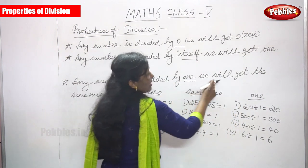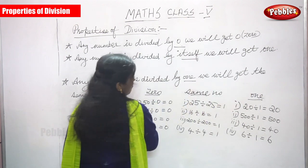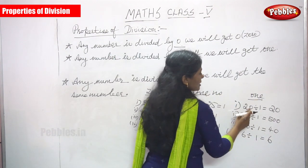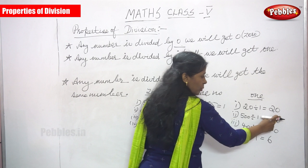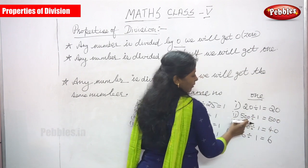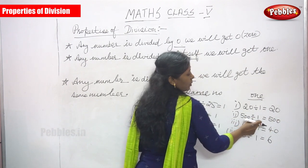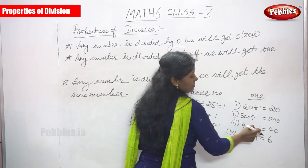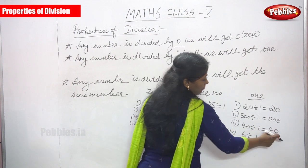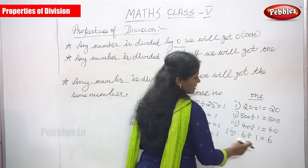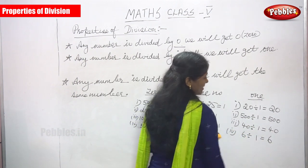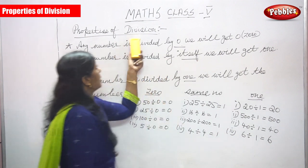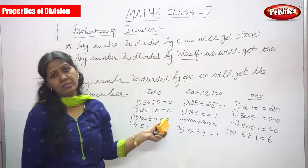Any number divided by one, we will get the same number. 20 divided by one you get 20, 500 divided by one you get 500, 40 divided by one you get 40, six divided by one you get six. So these are the properties of division.